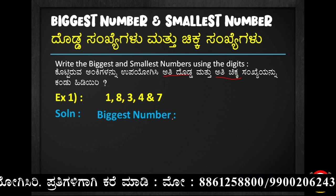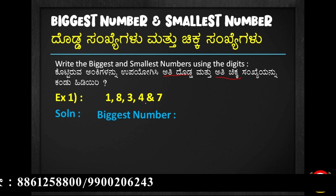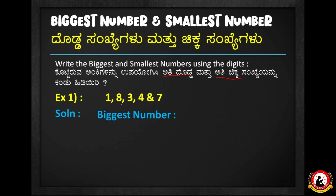Now we have to form the biggest number. We arrange the digits from largest to smallest: 8, then 7, then 4, then 3, then 1. So the biggest number is 87,431.